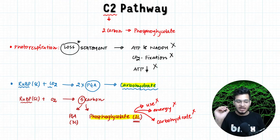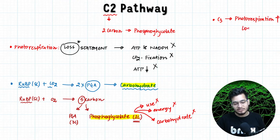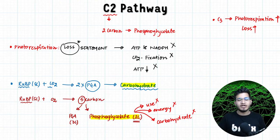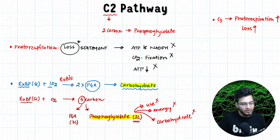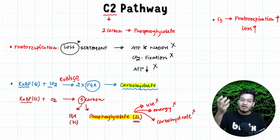That's why when photorespiration starts, your energy is spent and you get nothing at the end. Two important things: when we talk about C3 plants, photorespiration is present and is higher, meaning loss is higher. If loss is more, productivity is less. This is because in C3 plants, the oxygen quantity can increase or CO2 quantity can decrease. The enzyme that joins RuBP and CO2 is called RuBisCO, and RuBisCO can do both jobs — it can work as a carboxylase in the presence of CO2, and as an oxygenase in the presence of oxygen.